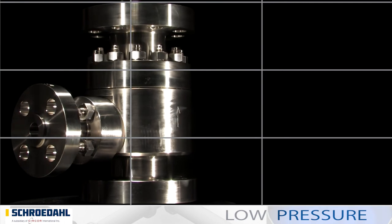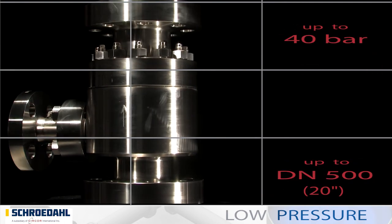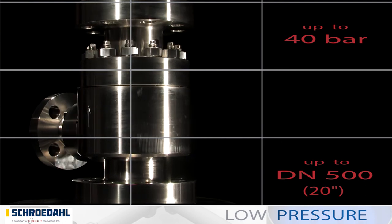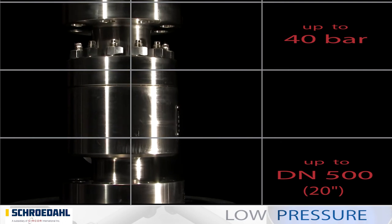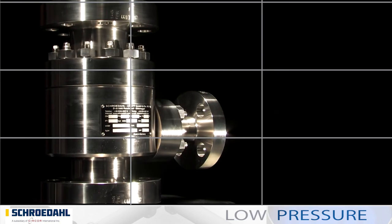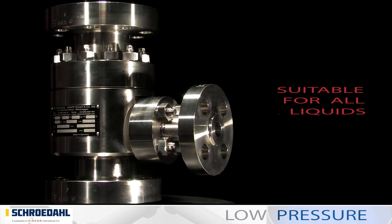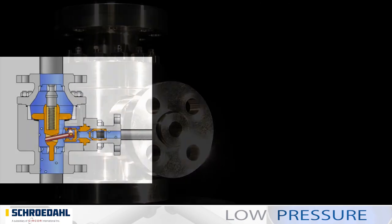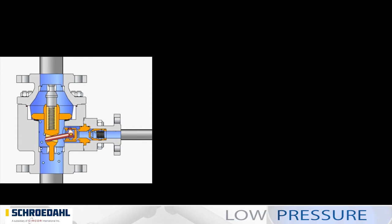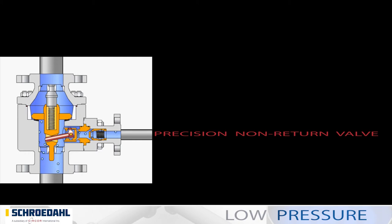TDL, our universal genius for pressure differentials of up to 40 bar and nominal widths up to DN500. Reliable, modulating and low maintenance, the TDL is suitable for all types of media. The TDL has a bypass unit flanged to the side of the housing. The precision non-return valve, which is specifically designed for your plant, controls the flow rate.